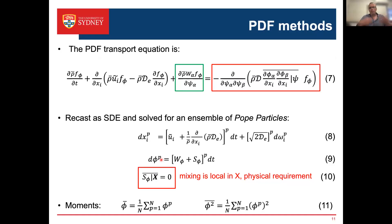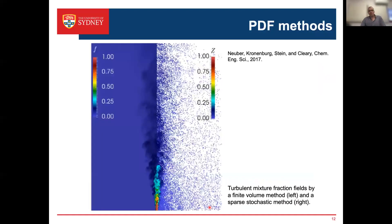The constraint on the mixing model in conventional PDF methods is that mixing is local in physical space and does not change mean values — it reduces variance only. We solve for an ensemble of Pope particles representing the discrete mass density function, and obtain moments by summing over the particles. A demonstration figure shows the equivalence between Eulerian flow solutions and the stochastic particle field for a non-reactive scalar.